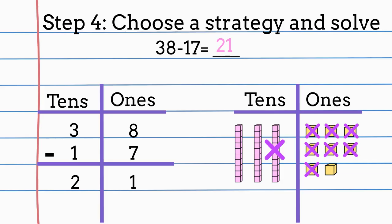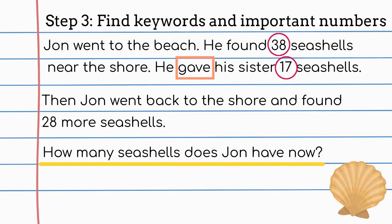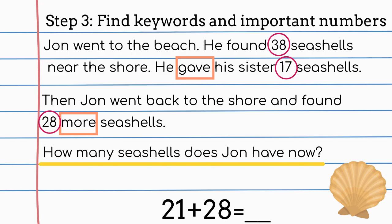I still have to solve the other part of my word problem. I'm going to go back and identify keywords and important numbers in the second part of the word problem so I can figure out what my next equation will be. In the second part of my word problem, I see that John found 28 more seashells. The number 28 is important because this is telling me how many seashells John found. The word more is an important keyword because if you get more of something, then you're adding on to what you already have. My second equation for this word problem would be 21 plus 28.